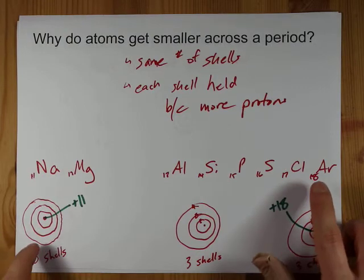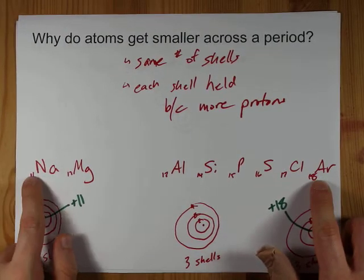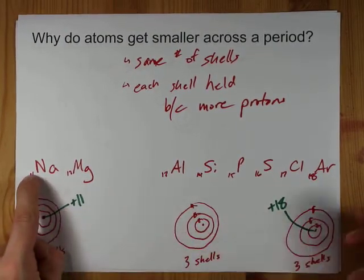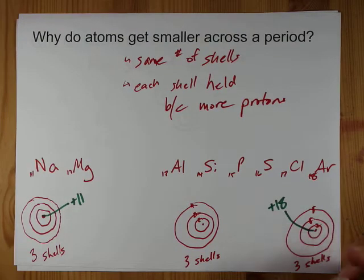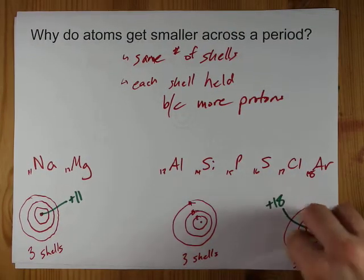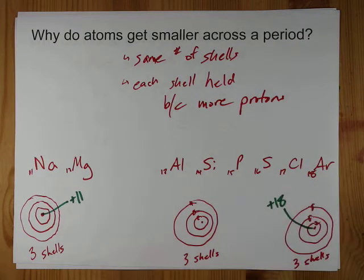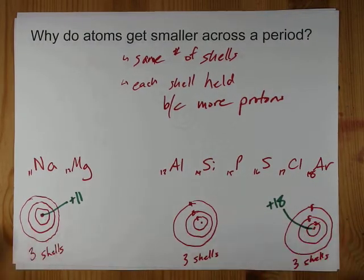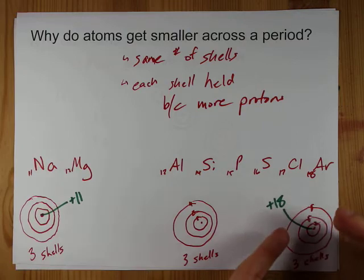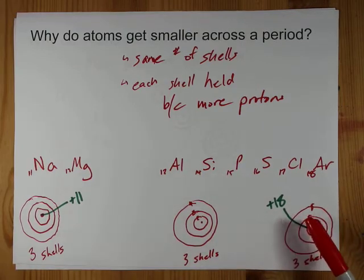And by the time you get to comparing argon and sodium, you have almost double the positive charge in the center for those electrons to be attracted and hold those shells in closer. So because you're attracting three shells worth of electrons and there's a greater positive charge in the nucleus,